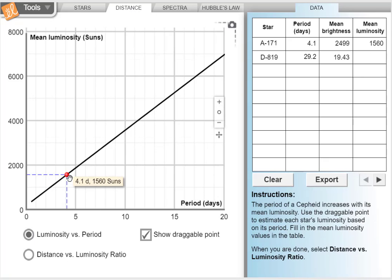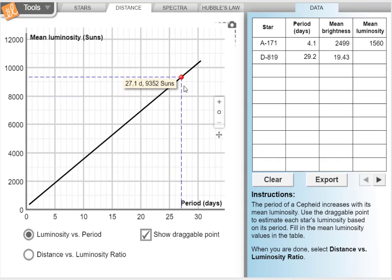So looking at our luminosity versus period chart again, I need to look for a period of 29.2 days, which means I'm going to have to zoom out and find 29.2 days and see that the mean luminosity or how bright this really is, is 10,063 suns.